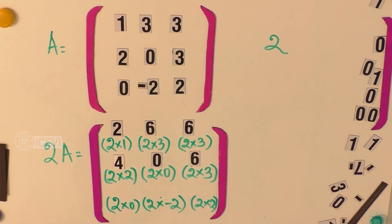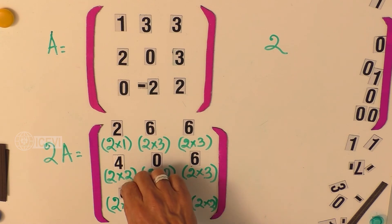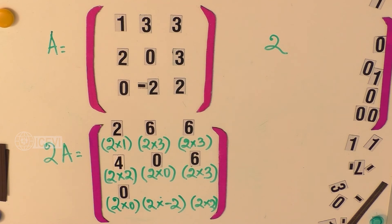That becomes the first element of row 3 is 0, and then the second element is minus 4, and the third element is 4. This is the product of the matrix A by 2, and this is called scalar multiplication.